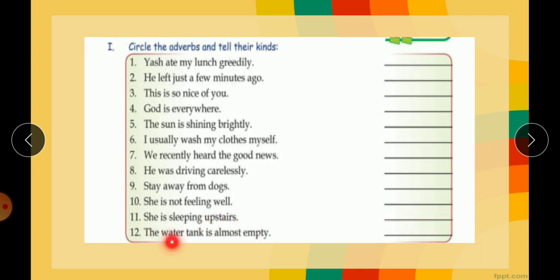She is not feeling well. Well is the manner, so adverb of manner. She is sleeping upstairs. Upstairs is adverb of place. The water tank is almost empty. So almost word is telling you how much empty that tank was, so almost will come under adverb of degree. Clear.